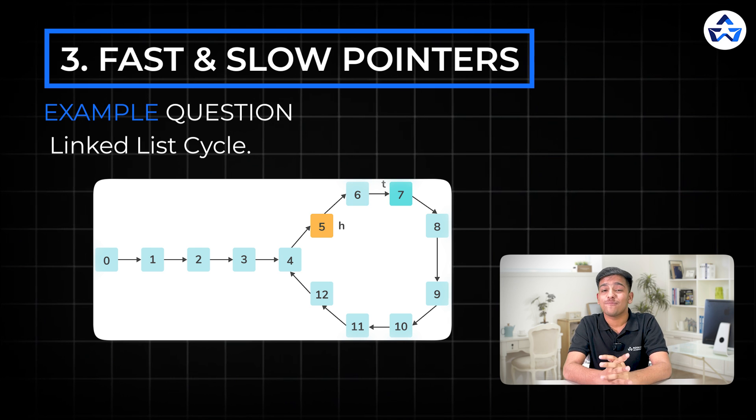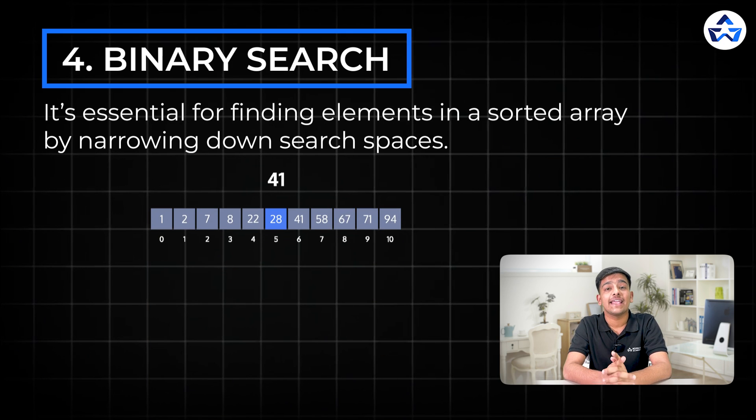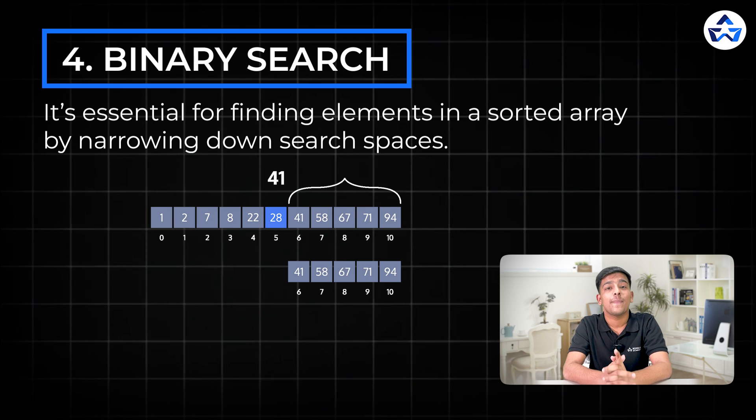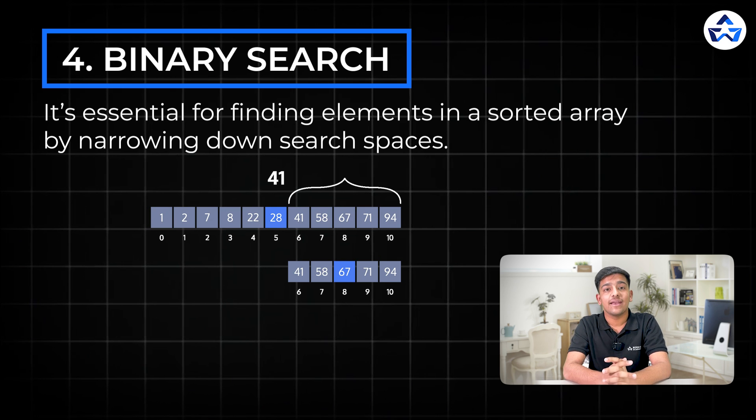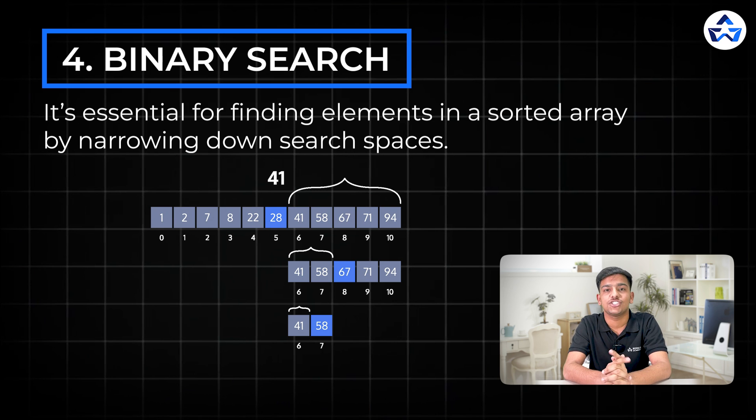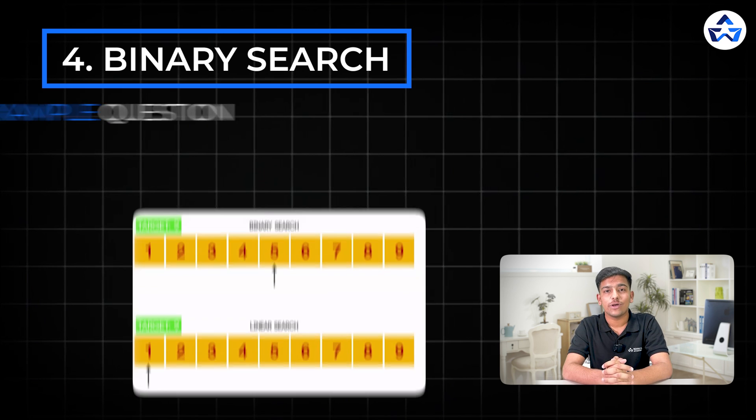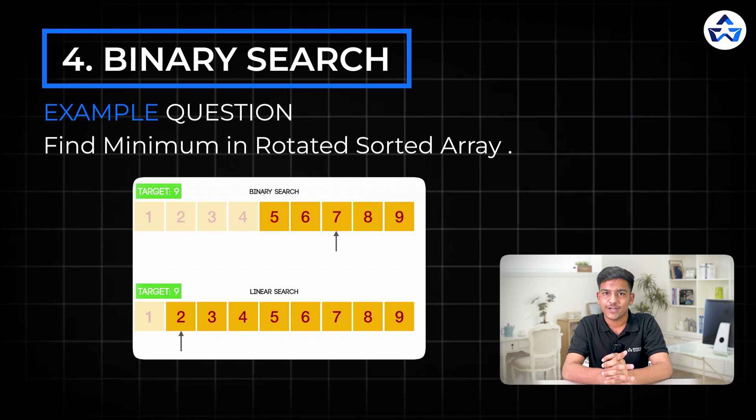So let's come to the next one which is one of my favorite patterns which is binary search. It's essential for finding an element within a sorted array by narrowing down the search space. Binary search helps you to break down the search space by half each time making it super efficient especially for sorted arrays. The example question is find minimum element in a rotated sorted array.